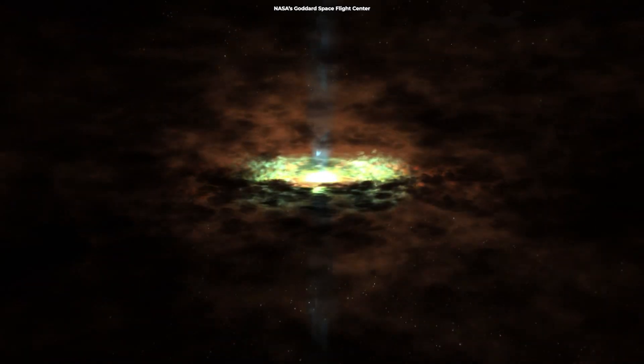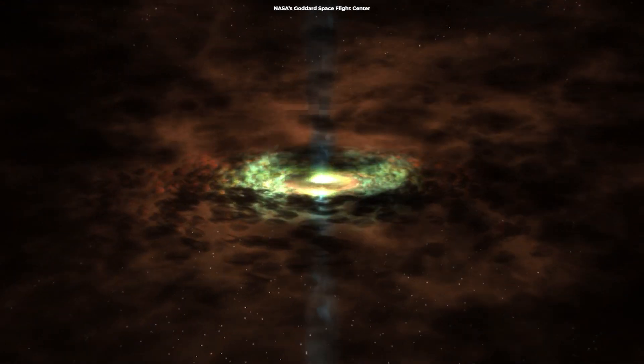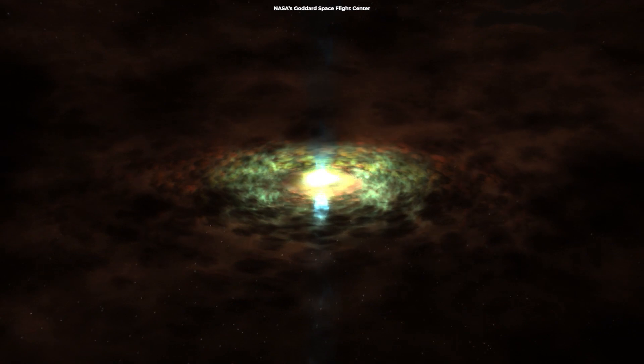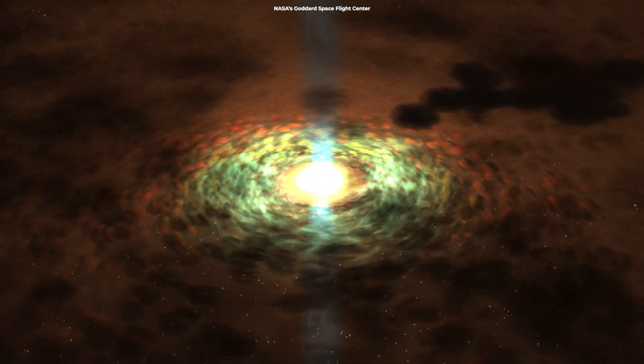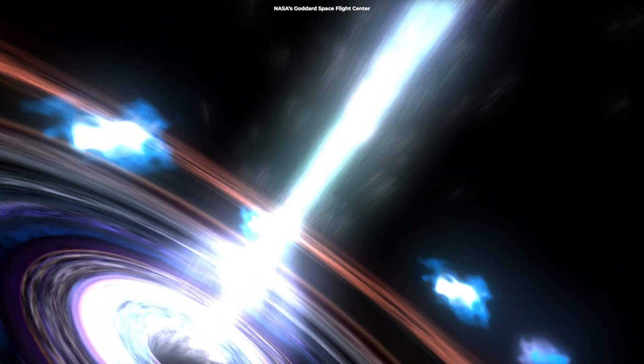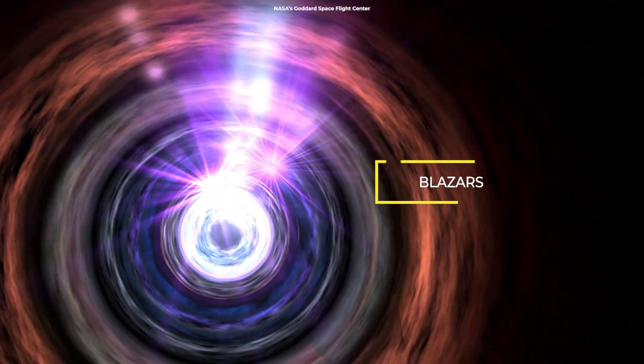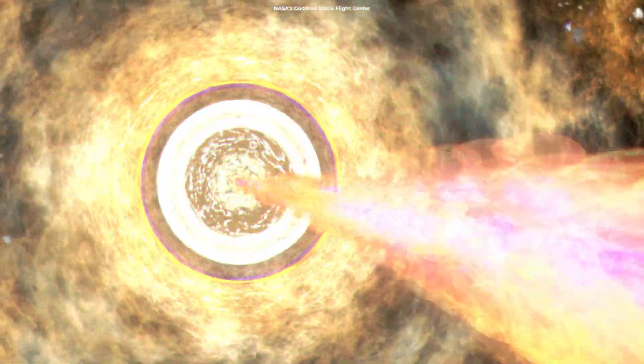Only a tiny percentage of active galaxies with jets have their jets aimed straight at Earth. In those circumstances, we observe radiation across the electromagnetic spectrum, amplified by the jet's incredible speed, and we refer to these sources as blazars.